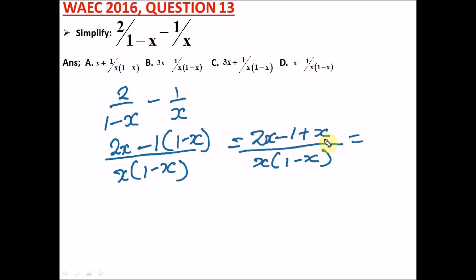Let's simplify this. We have 2x plus x, that will give us 3x, and we have minus 1 here. So we drop our minus 1 divided by x over 1 minus x. This is how we can simplify this, and this is our answer. Our right option here is option B.